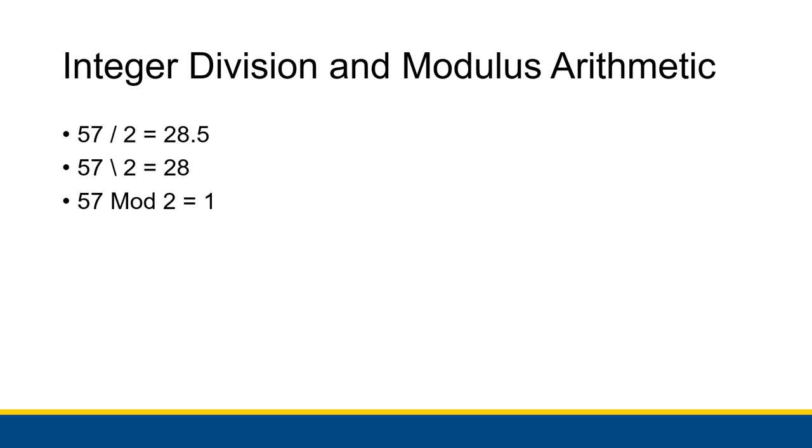All right, so I know integer division and modulus arithmetic might be a little tricky at first, and honestly some of it comes with practice. But let me give a couple more examples to show off some interesting stuff. So first we'll look at 57 and 2. If I do 57 divided by 2, we get 28.5, which we might expect. Now this would also be 28 remainder 1 because 28 times 2 is 56 and then plus 1 is 57.